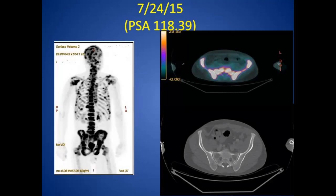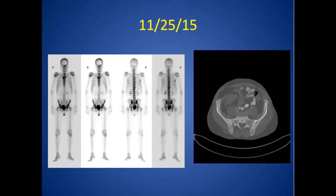A couple weeks later the PSA shot up to 118.4. Dr. Crawford knew something was really wrong and, despite the negative bone scan, ordered sodium fluoride PET-CT. On the MIP image you see a marked burden of osseous metastatic disease throughout predominantly the axial but also the proximal appendicular skeleton — probably one of the most dramatic cases I've ever seen over that short interval. On cross-sectional images there's intense uptake, but on CT it looks completely normal with no sclerotic disease.